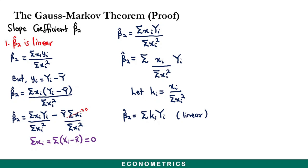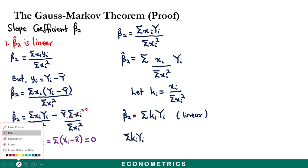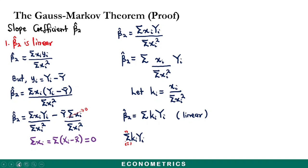To see why σkᵢYᵢ is linear: if we expand this summation from the first observation to the last, we get k₁Y₁ + k₂Y₂ + ... + kₙYₙ. We can clearly see the Yᵢ values and their associated coefficients k₁, k₂, through kₙ. This is a linear function of the Yᵢ values — the dependent variable.